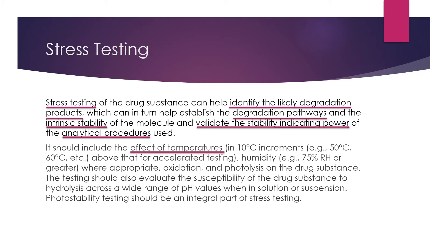The stress test conditions should include the effects of high temperatures in 10-degree increments — for example, 50°C or 60°C above the accelerated testing — high humidity conditions like 75% or more, and where appropriate, oxidation and photolysis on the drug substance. The testing should also evaluate the susceptibility of the drug substance to hydrolysis across a wide range of pH values when in solution or suspension. Photostability testing should be an integral part of stress testing, and it is described in ICH Q1B.